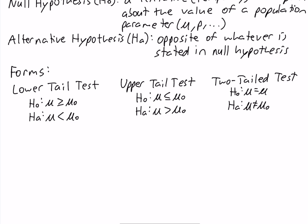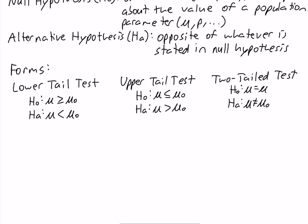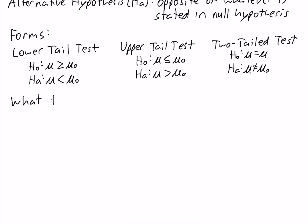When you are given a word problem to determine whether you are doing a Lower-Tailed, Upper-Tailed, or Two-Tailed test, what you want to do is look for what the test is trying to determine. Whatever the test is trying to determine is always going to be the Alternative. So try to figure out what the test is trying to determine and make that the Alternative Hypothesis. Since the Null and the Alternative are opposites, once we have the Alternative, we automatically have the Null Hypothesis as well.